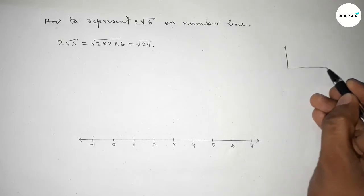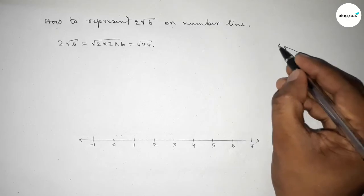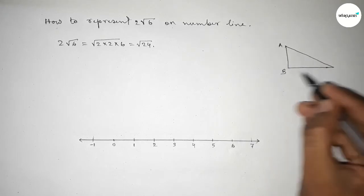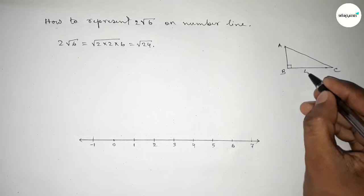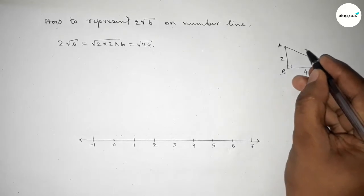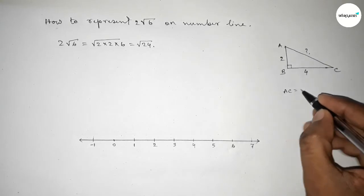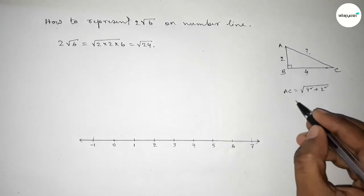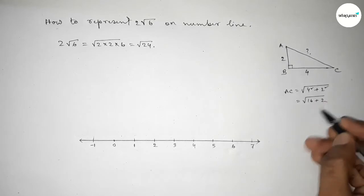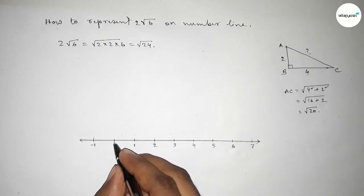We first need to represent √20, then √24. If a right angle triangle has base equal to four and height equal to two, then by Pythagoras theorem: hypotenuse = √(4² + 2²) = √(16 + 4) = √20. We apply this concept from point zero to four.